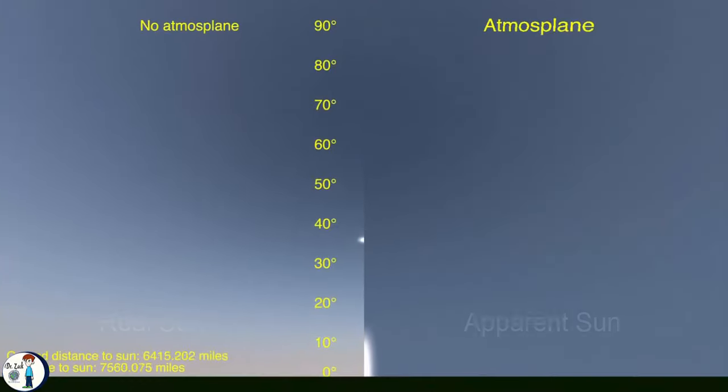When the apparent sun is at zero degrees, the real sun is at 35 degrees. And as the real sun rises at its normal speed, the apparent sun follows at a higher speed. The more they rise, the closer they get. And when they are 90 degrees, the refraction is zero.